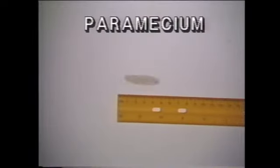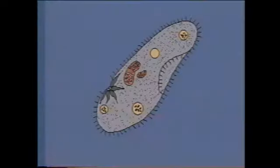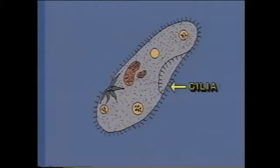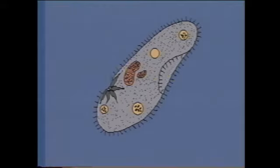Many other protozoans move with hundreds of short hair-like cilia. These cilia move in a beautiful rhythm, sending the paramecium gliding and spinning through the water. Like the amoeba, the paramecium has no head or arms or legs, but it does have a mouth right in the middle of its body, and uses cilia to push food into it. The paramecium has two nuclei — a big one and a small one — and also has food bubbles and waste bubbles like the amoeba.